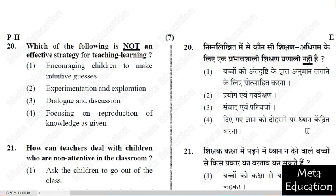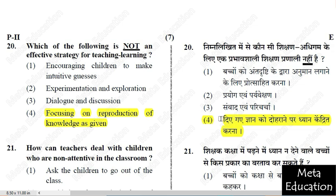Question 20: Which of the following is NOT an effective strategy for teaching-learning? 1) Encouraging children to make intuitive guesses; 2) Experimentation and exploration; 3) Dialogue and discussion; 4) Focusing on reproduction of knowledge as given. The correct answer is option 4: focusing on reproduction of knowledge as given. If a child just recalls or reproduces knowledge as-is without processing, no effective learning takes place.